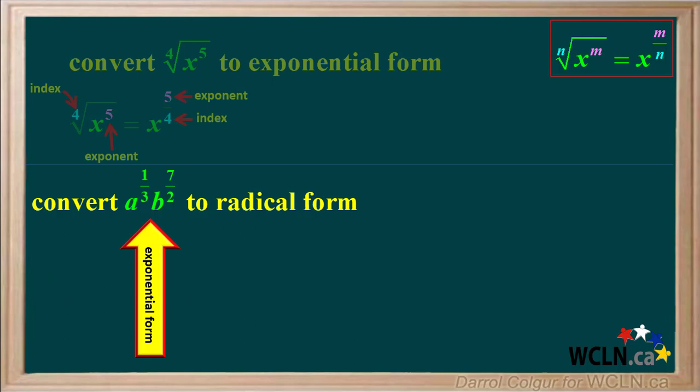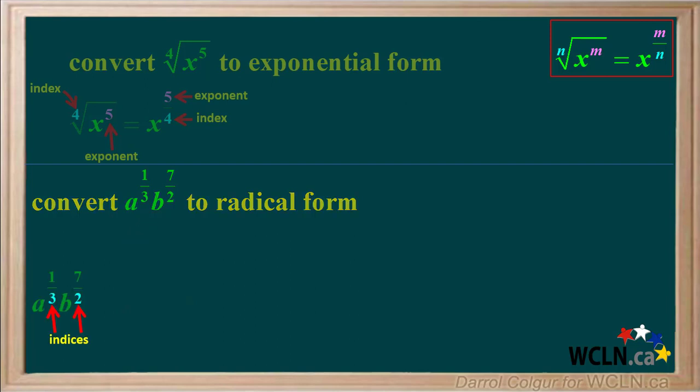In the second example, we're asked to convert a to the one third, b to the seven halves, to radical form. 3 is the index of a, and 2 is the index of b. 1 is the exponent of a, and 7 is the exponent of b.